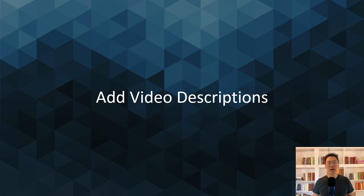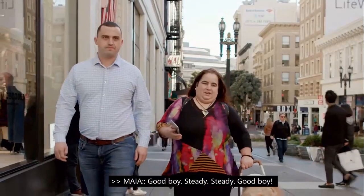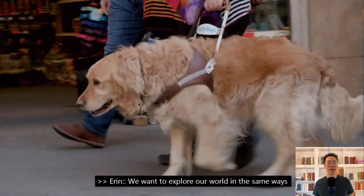One more thing to help people with very low or no vision: add video descriptions to any pre-recorded videos. These describe what's happening in the video so people who can't see it can understand it better. For example, in the natural pauses of dialogue, a voice describes what's happening on screen — like 'A busy city street. Maya with her guide dog.' This is something you need to do when producing the video before inserting it into PowerPoint.